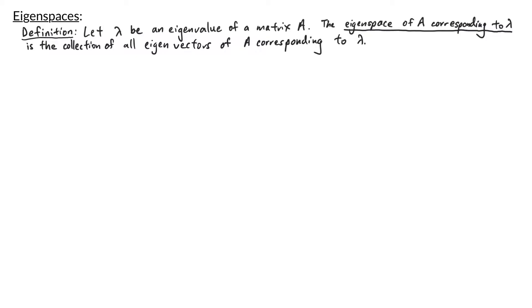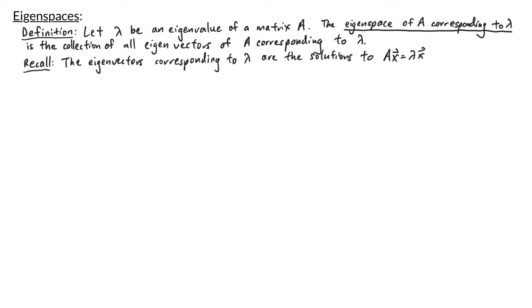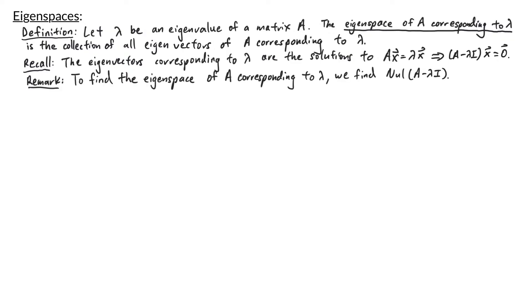In this video we're going to talk about eigenspaces. Let lambda be an eigenvalue of a matrix A. The eigenspace of A corresponding to lambda is the collection of all eigenvectors of A corresponding to lambda. The eigenvectors corresponding to lambda are the solutions to A times x equals lambda x, which we rewrite as A minus lambda I times x equals the zero vector. So what we're looking for is the null space of A minus lambda I. To find the eigenspace of A corresponding to lambda, we need to find the null space of A minus lambda I.